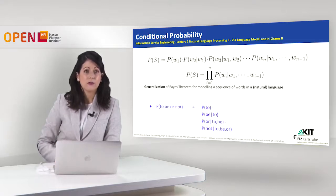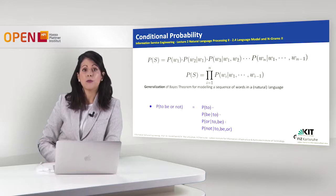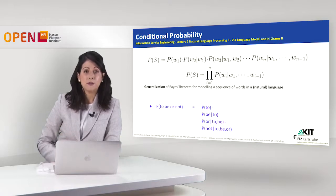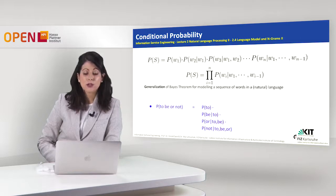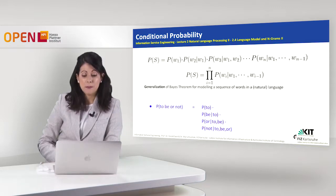We saw the following example which we can repeat. To compute the probability of a sequence of words 'to be or not,' we first compute the probability of the word 'to,' multiplied by the conditional probability of 'be' given that 'to' comes right before it, multiplied by the conditional probability of 'or' given that both 'to' and 'be' come right before it, multiplied by the conditional probability of 'not' given that all three words 'to,' 'be,' and 'or' come right before it.